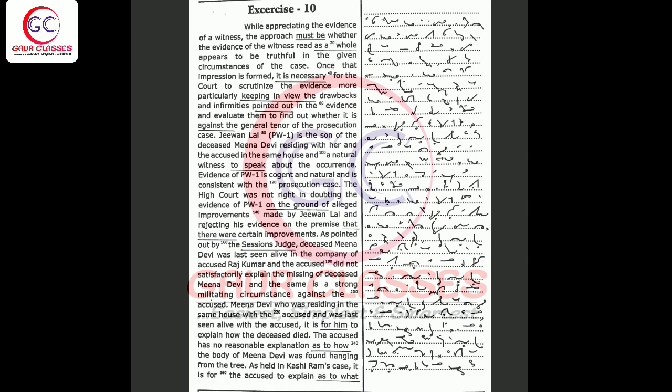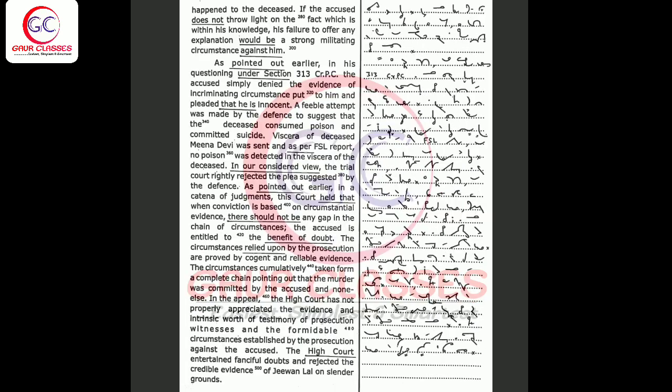Meena Devi who was residing in the same house with the accused and was last seen alive with the accused, it is for him to explain how the deceased died. The accused has no reasonable explanation as to how the body of Meena Devi was found hanging from the tree. As held in Kashi Ram's case, it is for the accused to explain as to what happened to the deceased.